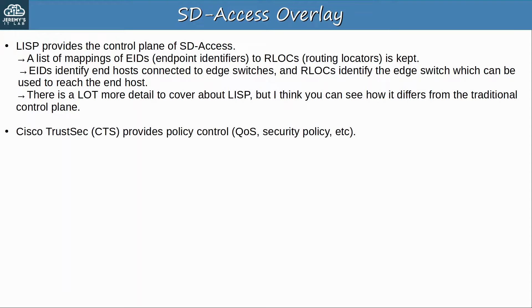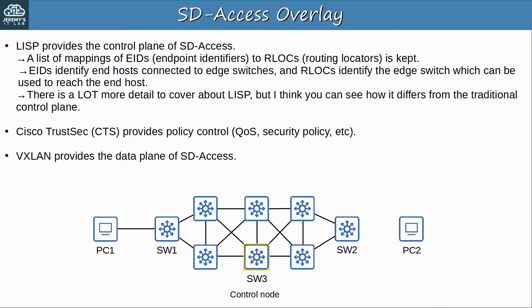Cisco TrustSec (CTS) provides policy control such as QoS and security policy — just remember that name. And finally, VXLAN provides the data plane of SD Access, the tunnels that are used to actually forward traffic in the data plane. Let's look at how VXLAN tunnels work with LISP.